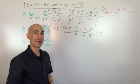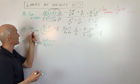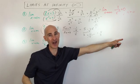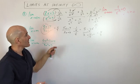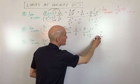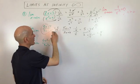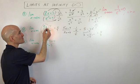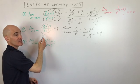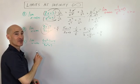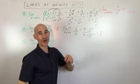What happens if we're going to negative infinity — going left on the graph instead of right? For this example, you still get 5 thirds. Even if x is negative 1 million, the numerator is 5 times negative 1 million and the denominator is 3 times negative 1 million. The two negatives cancel, and you still get the ratio of 5 thirds.